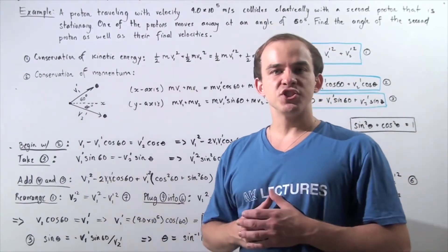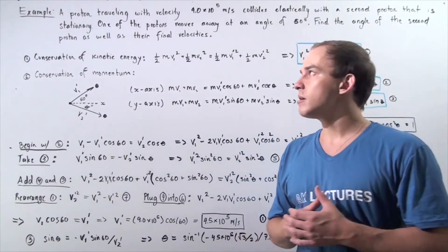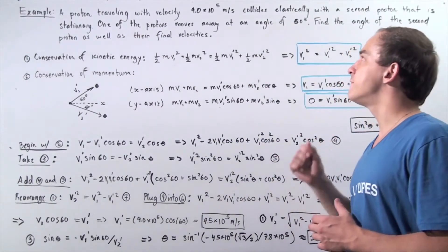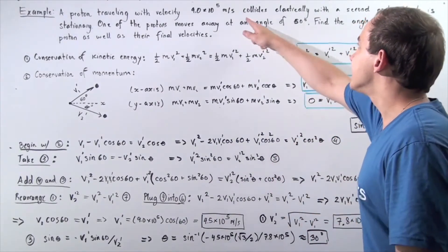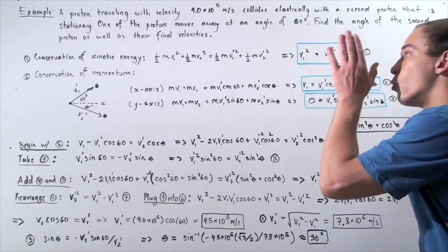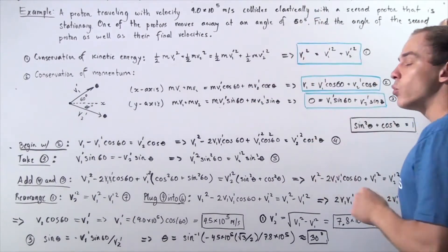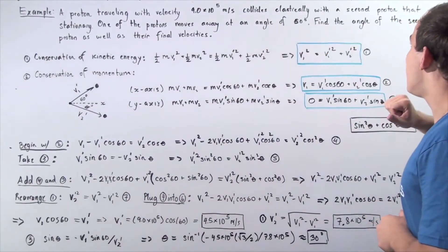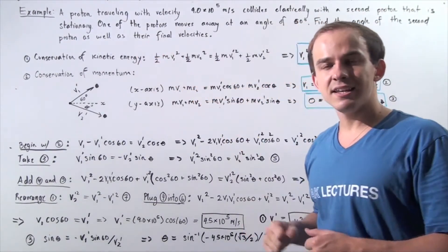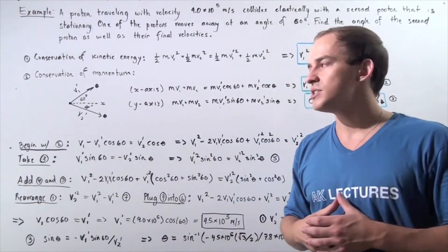In this example, we're going to examine a two-dimensional elastic collision. Let's suppose that a proton traveling with velocity 9.0 times 10 to the 5 meters per second collides elastically with a second proton that is stationary. One of the protons moves away at an angle of 60 degrees with respect to the x-axis. We want to find the angle of the second proton as well as the final velocities of the two protons after the elastic collision takes place.